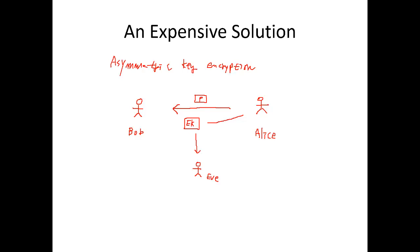Once Alice receives that encrypted key, Alice uses her private key to decrypt that encrypted symmetric key. She now has the symmetric session key to communicate with Bob. Bob will encrypt his message using that secret symmetric session key and send it to Alice. Since Alice already received the secret symmetric session key, she can decrypt Bob's message. But this solution is kind of expensive because asymmetric key encryption is much more complicated than symmetric key encryption, and you have to have this infrastructure established to use it.